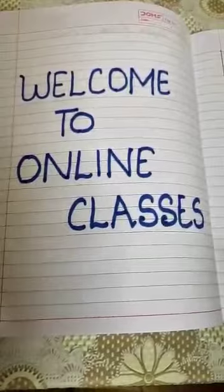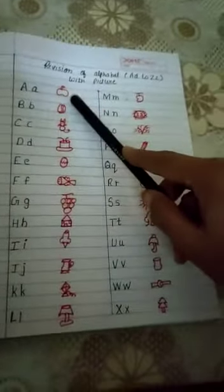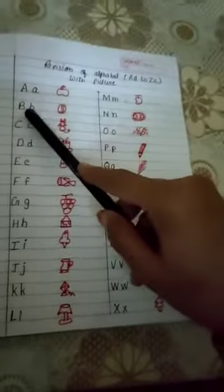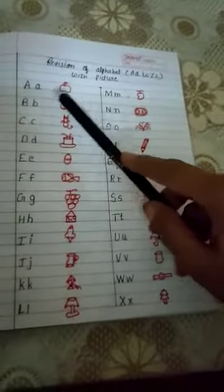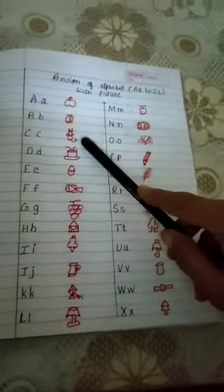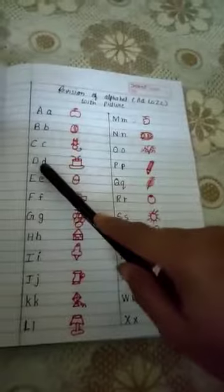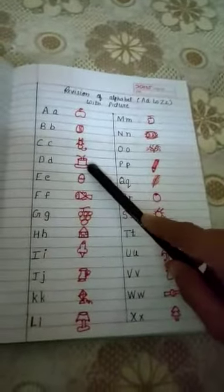You have to repeat after me. A for Apple, B for Ball, C for Cat, D for Drum.